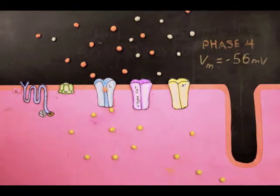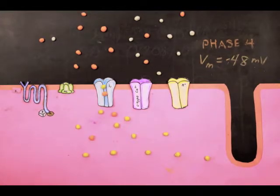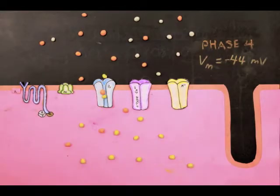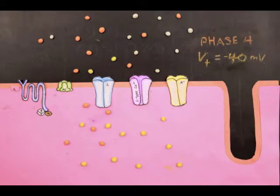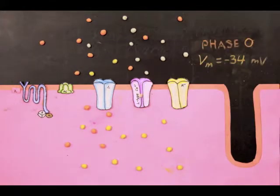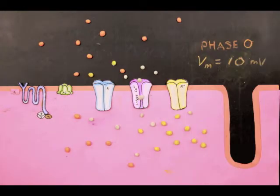Isoproteranol also affects the action of nodal cells. Without external factors, the nodal cell reaches threshold by way of sodium and potassium flow through the I-funny channels. Once the membrane reaches threshold, the voltage-gated L-type calcium channels open, allowing calcium to flow into the cell and continue depolarizing the membrane.